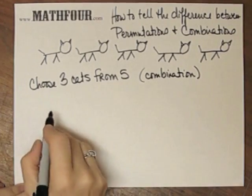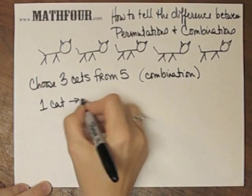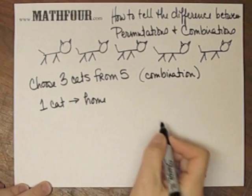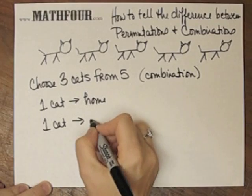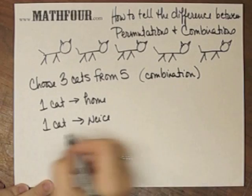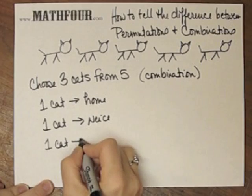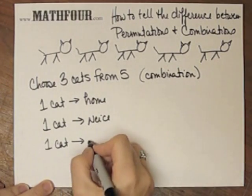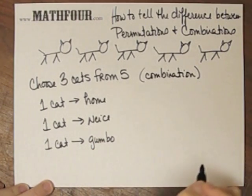Now, if I tell you that one cat is going to come home with me and be my pet, one cat is going to my niece's house, Emily Autumn, and one cat is going to go into my gumbo for the evening dinner.